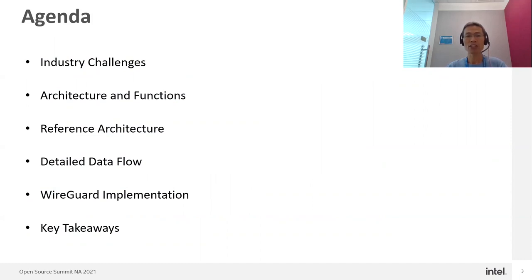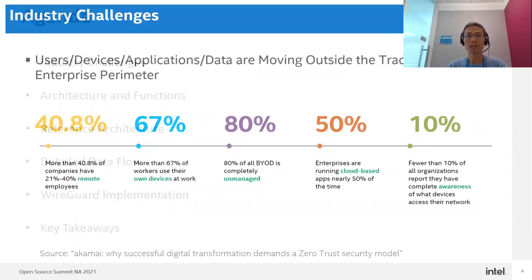Then our colleague Zhang Fan will introduce VPP and WireGuard implementation and optimizations. Then we will summarize all the topics. First, we will introduce the industry challenges for networking and security.